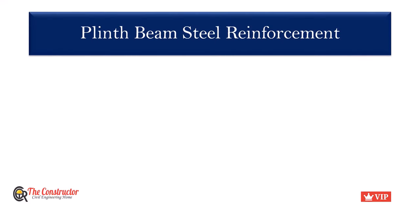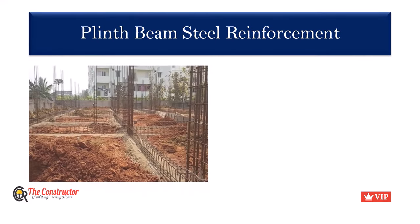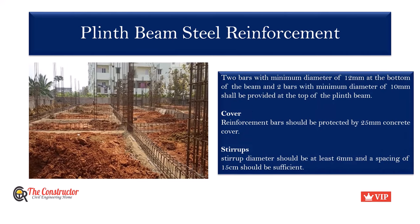Plinth beam steel reinforcement: The reinforcement details of a plinth beam are similar to that of a normal beam. Two bars with a minimum diameter of 12 mm are provided at the bottom, and two bars with a minimum diameter of 10 mm at the top. It is provided with a cover of 25 mm, which can change based on exposure conditions. Stirrups should have a minimum diameter of 6 mm, with a minimum spacing of 15 cm.